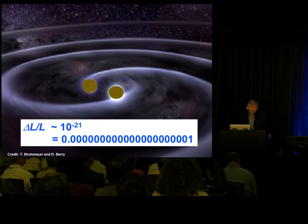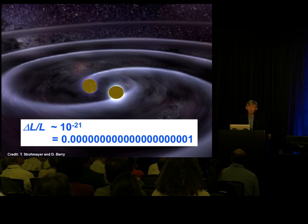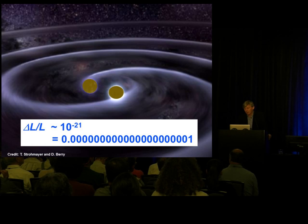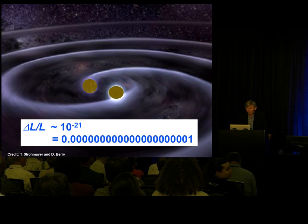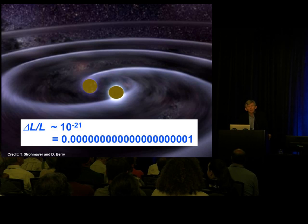A colleague of mine at Caltech, Kip Thorne, started thinking seriously about this in the 70s and had serious conversations with Rainer Weiss, who was then a professor of physics at MIT. They realized you could use an interferometer to measure gravitational waves — a bold vision. More importantly, they were able to sell that vision to the National Science Foundation and get it funded. It took a long time, and I'll tell an anecdote later about how long people thought it would take.